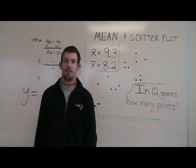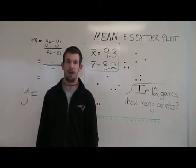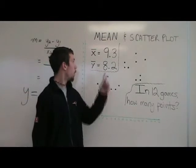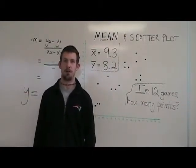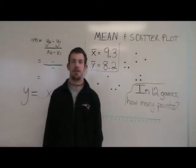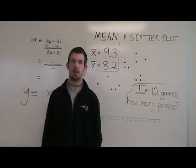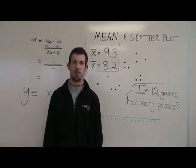You will be given a scatter plot and also an x̄ and ȳ, which are averages of the x values and y values. The first thing to do is plot the point x̄ and ȳ, which is the mean point.